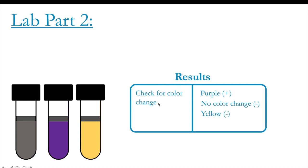And this right here is the results table. So once again, you'll check for color. Purple is positive. No color change is negative. Yellow is also negative, but with the addition of fermentation.